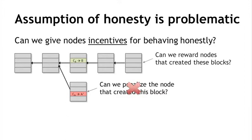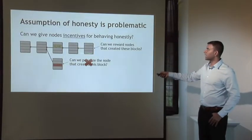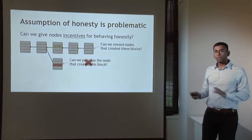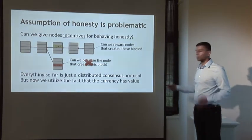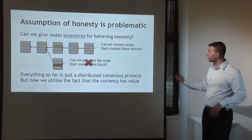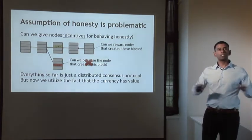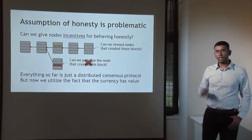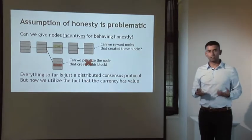In other words, we're going to use bitcoins in order to incentivize the nodes that created these blocks. So far everything I've said is just an abstract algorithm for achieving distributed consensus. Now we're going to break out of that model. What I'm going to say now is specific to the fact that what we're achieving through this distributed consensus process is in fact a currency, and we're going to incentivize these nodes by paying them in units of this currency.